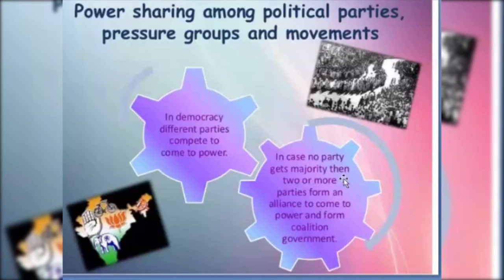In a coalition government, each and every political party has the power to take decisions. Taking the example of Maharashtra, in recent times a coalition government was formed by Shiv Sena, NCP, and Congress. Uddhav Thackeray from Shiv Sena became the Chief Minister, and other ministerial portfolios were given to the other political parties. So here, power is shared among the different political parties.